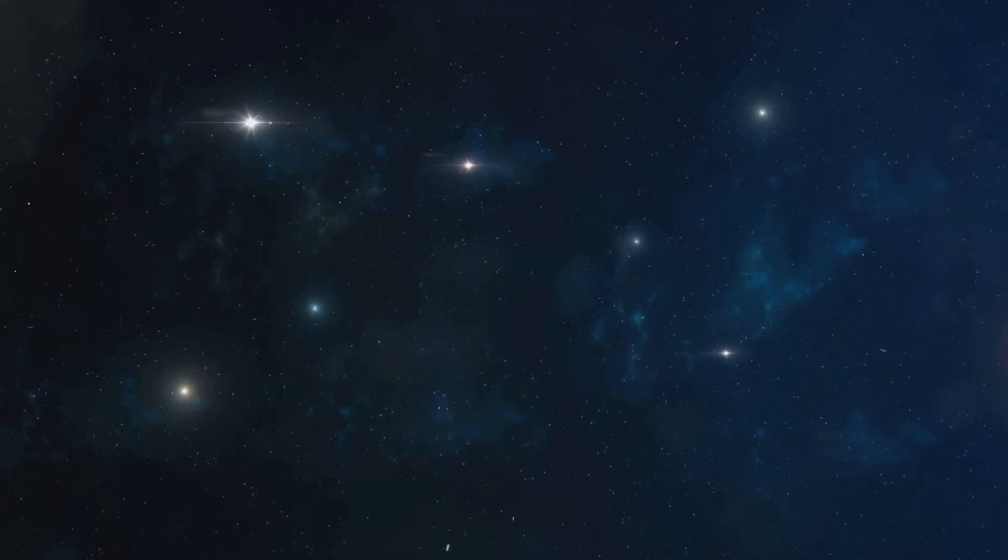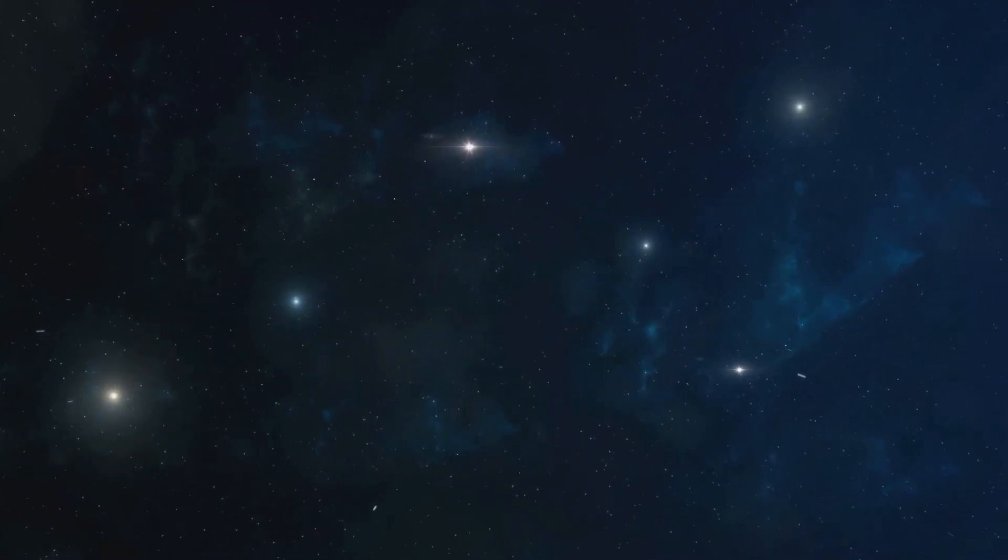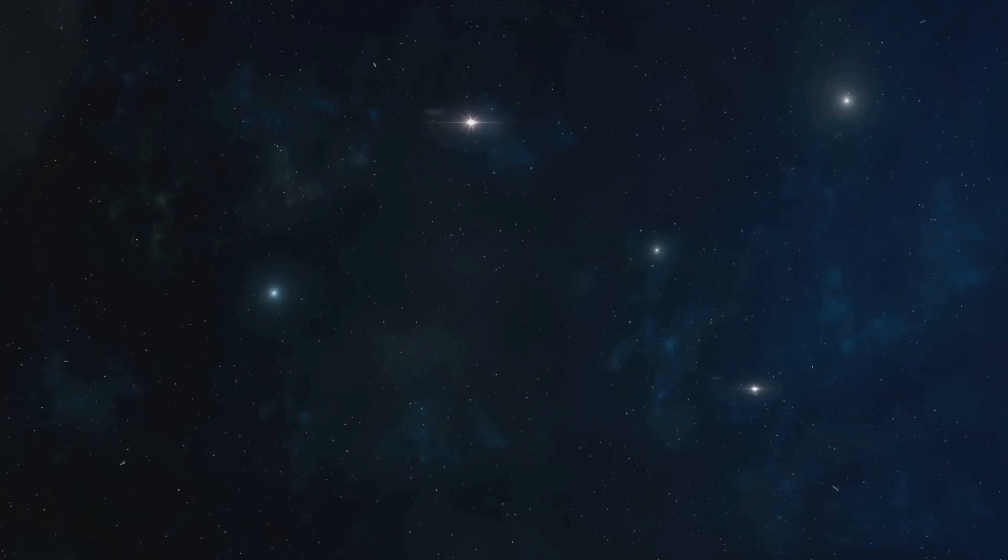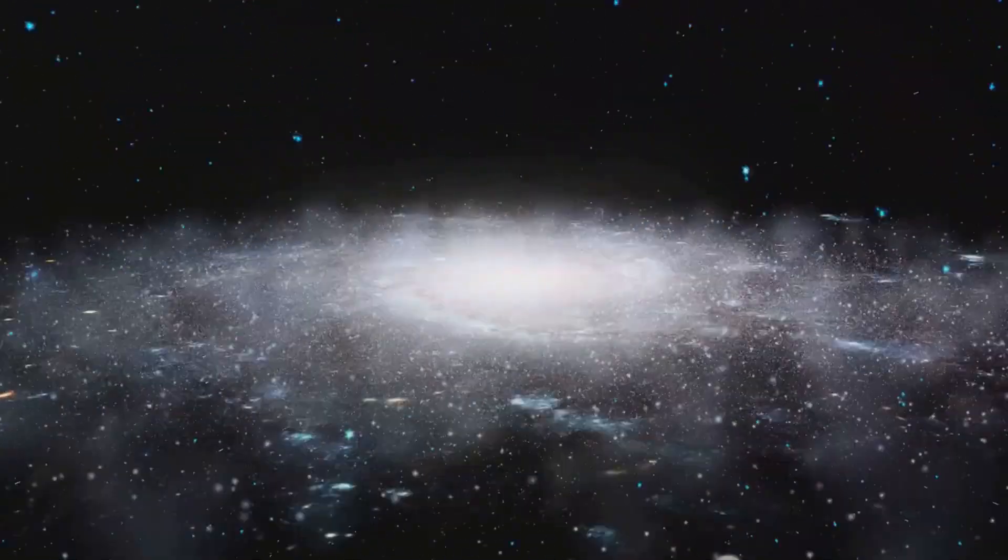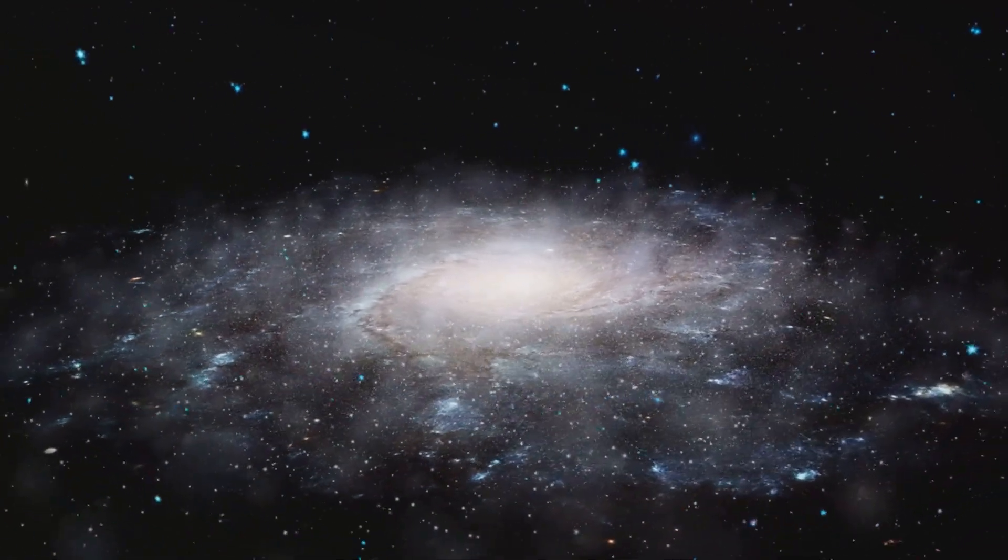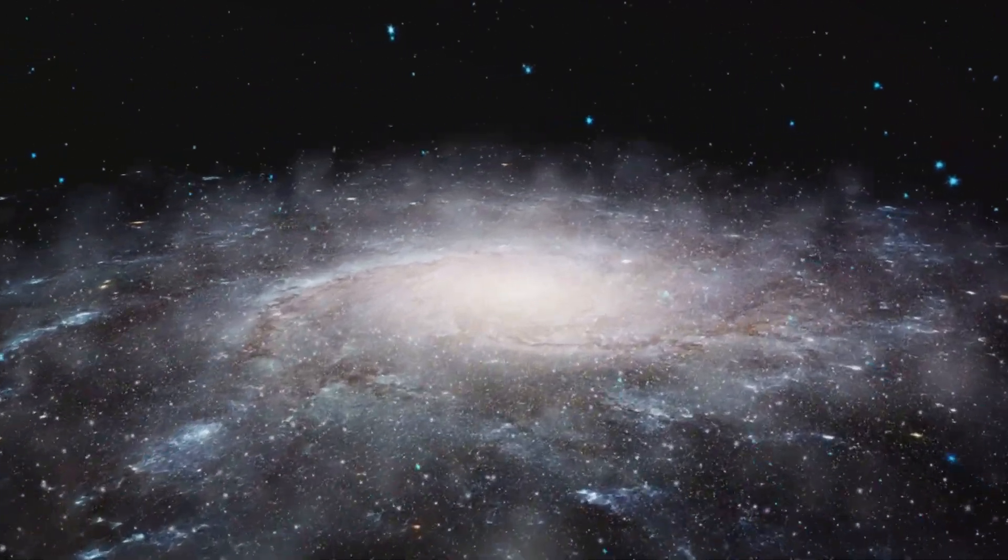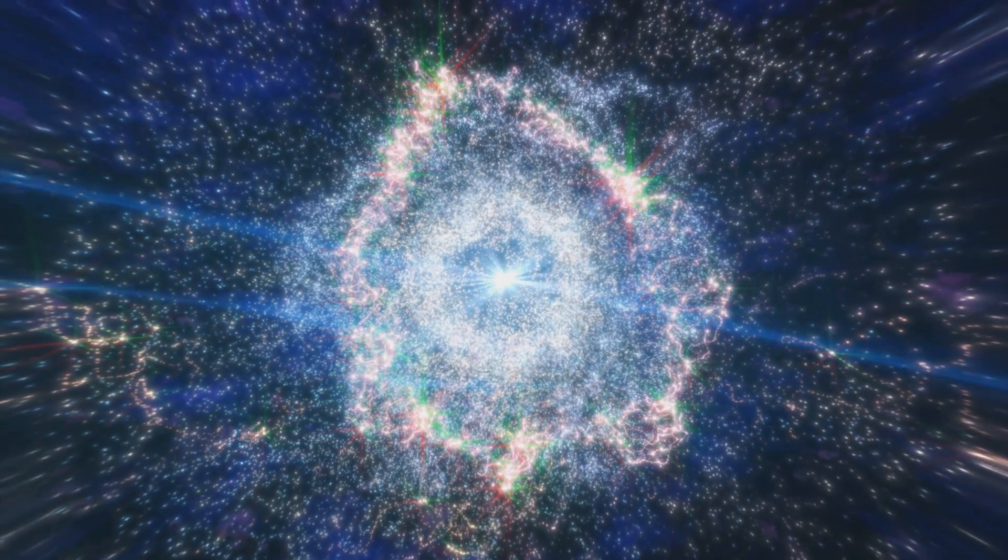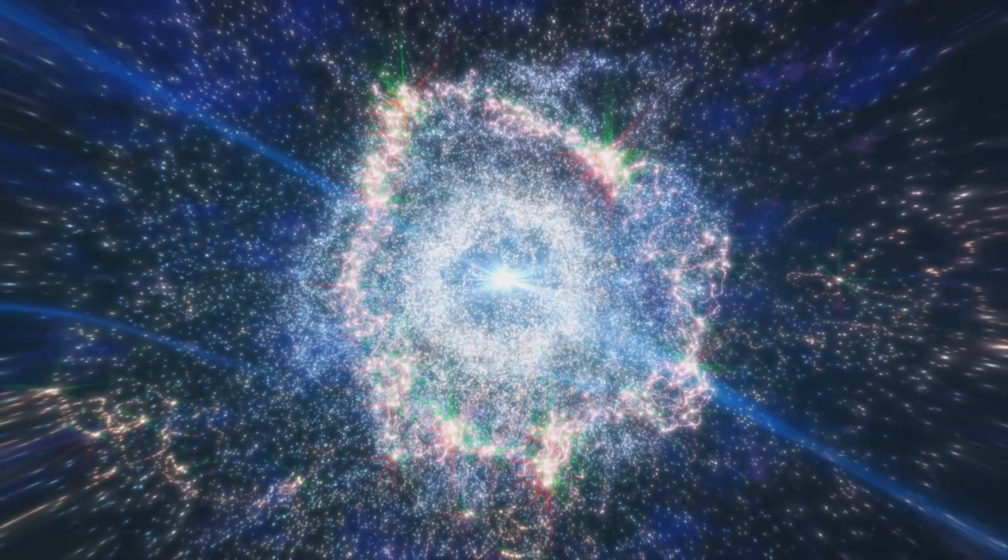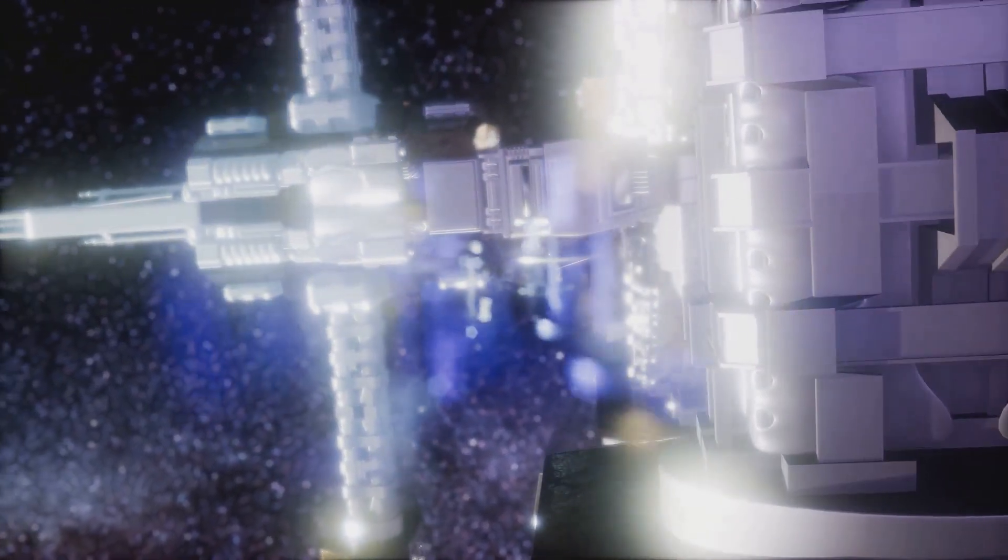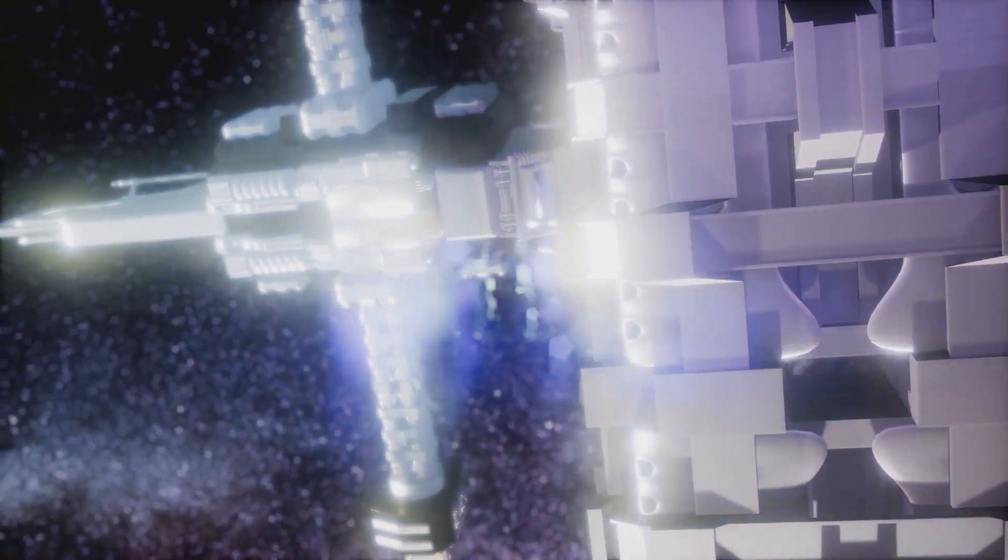Imagine the universe as a giant circuit board, with galaxies, stars and even planets acting as components in an intricate electrical system. Just as current flows through a circuit, proponents of the Electric Universe theory argue that electrical currents flow through cosmic plasma, the wiring of our celestial circuit board. These currents, they suggest, generate magnetic fields and cause the plasma to emit light, creating the stunning cosmic vistas we observe with our telescopes.